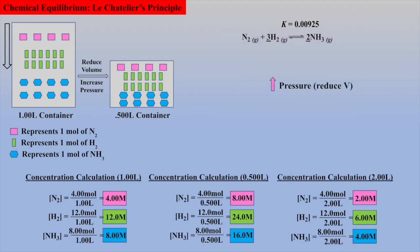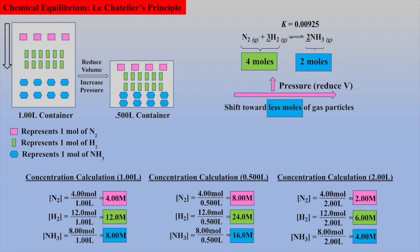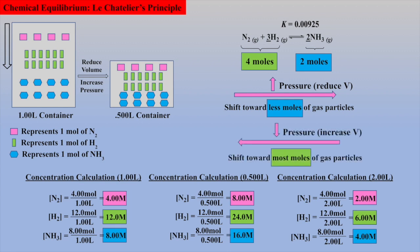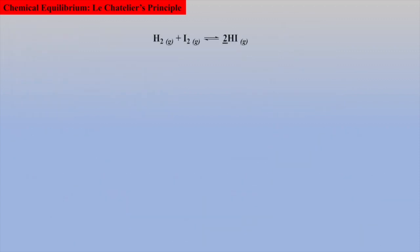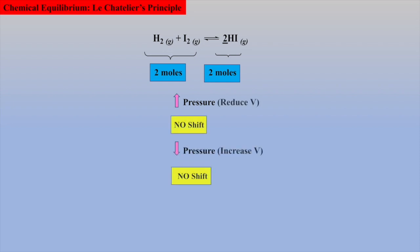In summary, if the pressure is increased, the shift will be toward less moles of gas particles; and if the pressure is decreased, the shift will be toward more moles of gas particles. It is also worth noting that if an inert gas is added, there will be no shift in equilibrium. In this example, hydroiodic acid has the same number of moles on both sides of the equilibrium; thus, if the pressure is increased or decreased, the equilibrium will not shift.